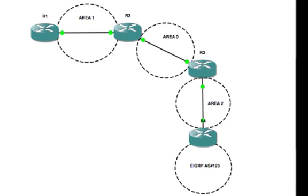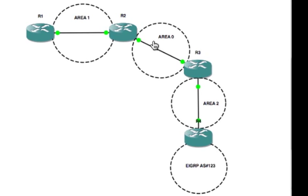Here's the topology. You can see we've got R2 and R3 separated by one connection in area zero, so we're going to configure this one first. Let's jump straight on to R2.